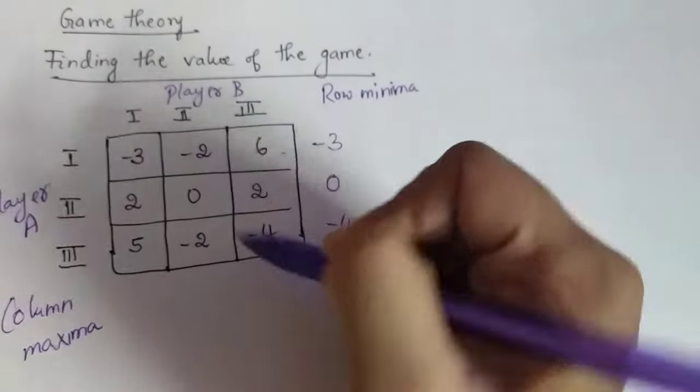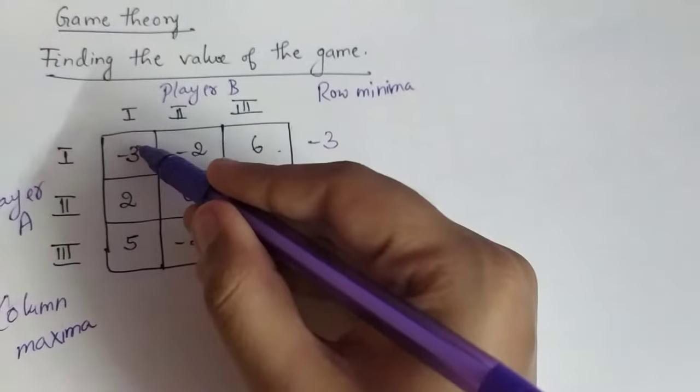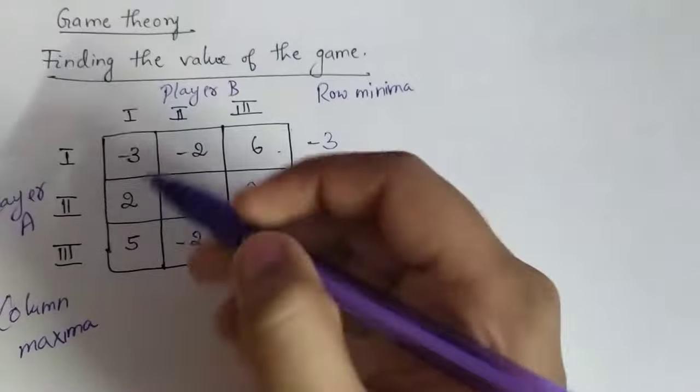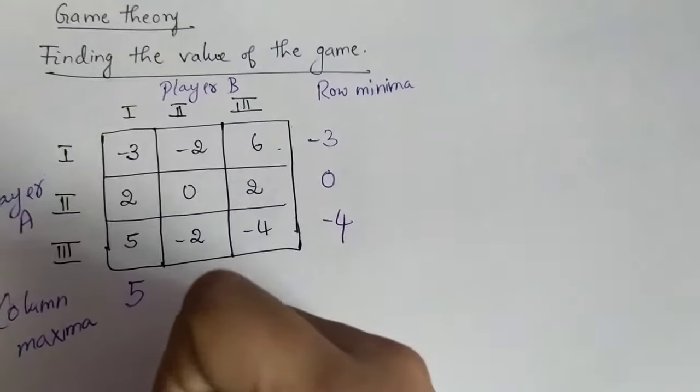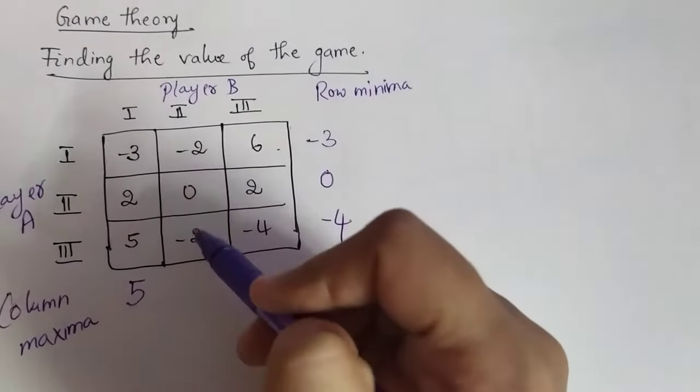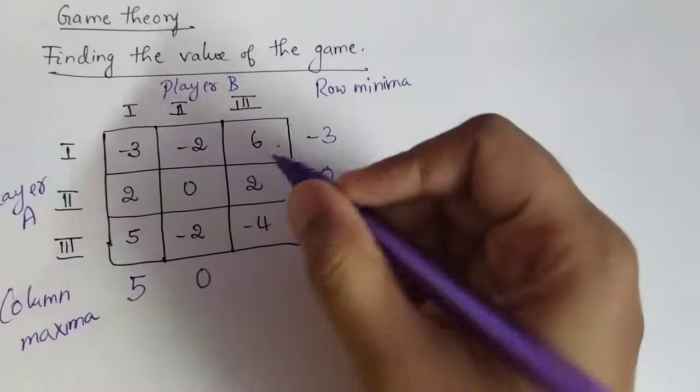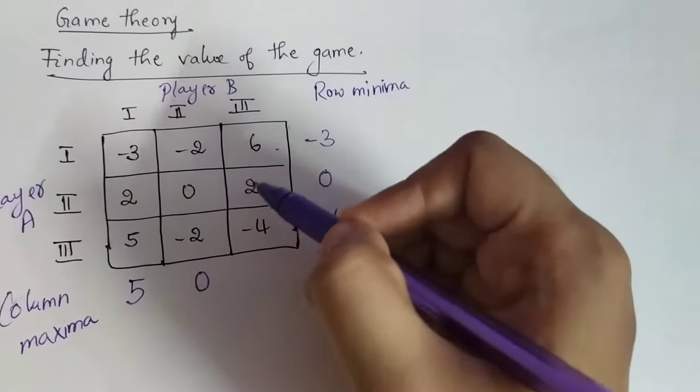When it comes to column-wise, you will have to select the maximum value. The maximum among minus three, two, and five is five. The maximum among minus two, zero, and minus two is zero. And the maximum among six, two, and minus four is six.